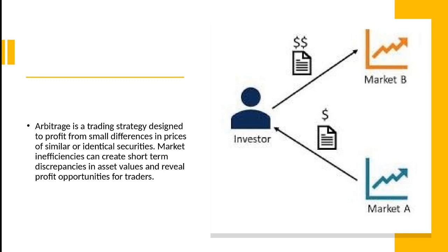Arbitrage is a strategy designed to profit from small differences in prices. For example, if market A has a lower price of a commodity and market B has a higher price for the same commodity, an investor will purchase that security from market A and then sell it in market B, earning some profit.